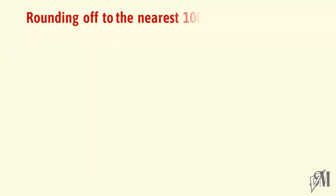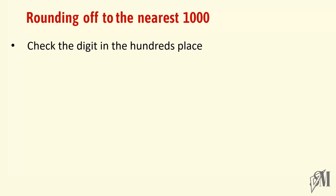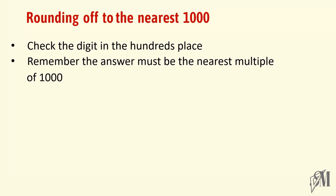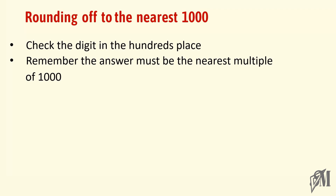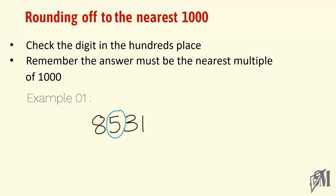Let's see how to round off to the nearest thousand. You have to check the digit in the hundreds place, and the answer must be the nearest multiple of thousand. Now let's round off 8531 to the nearest thousand. The place we pay attention to is the hundreds place, so the digit there is 5. Since the digit is equal to 5, we add 1 to 8, and the digits 5, 3, and 1 are cancelled and we put zeros. Our answer becomes 9000.